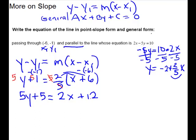This is your point-slope form. Now I'm going to rearrange to get zero on one side. I'll keep it on the left since the x already has a positive coefficient there. So I subtract 5y and subtract 5, giving 0 on that side. And 12 minus 5 gives 7. That is general form.